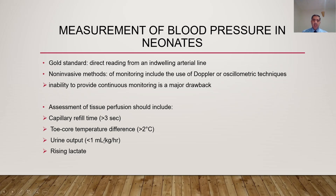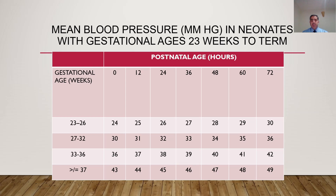The signs of systemic hypoperfusion to remember are: capillary refill time greater than 3 seconds, core-to-peripheral temperature difference greater than 2°C, urine output less than 1 mL/kg/hour — though this is not applicable on the first day of life when we accept urine output down to 0.5 mL/kg/hour — and rising lactate.